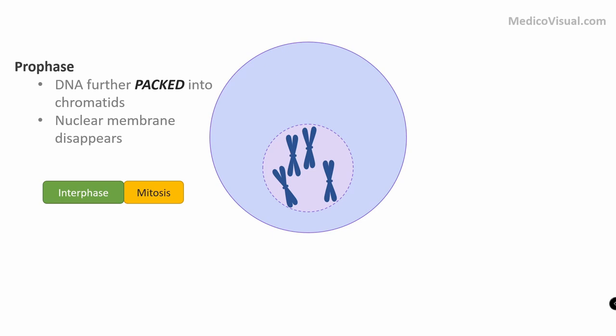Remember, DNA is not replicated in prophase. DNA is replicated before prophase starts — in interphase, specifically the S phase (synthesis phase) of interphase. Chromatin is copied in interphase, and then further condensed to form chromosomes in prophase.